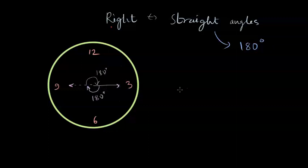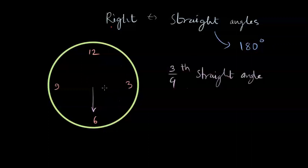And that would mean it will be completing two straight angle rotations clockwise. What if the minute hand was at six and then it rotated three-fourths of a straight angle? We already know that the clock is going to move clockwise.